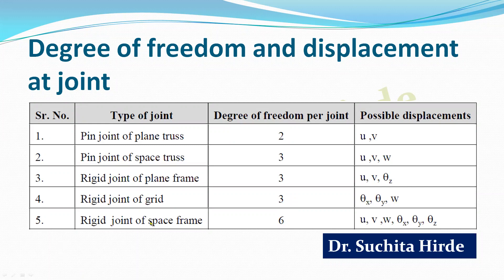For rigid joint of space frame, degree of freedom per joint is 6. The possible displacements are all translations and rotations along all axes: U, V, W — translations along x, y, and z axes respectively — and theta-x, theta-y, theta-z — rotations about x, y, and z axes respectively. You must remember this table to calculate kinematic indeterminacy for plane truss, space truss, plane frame, grid, and space frame.